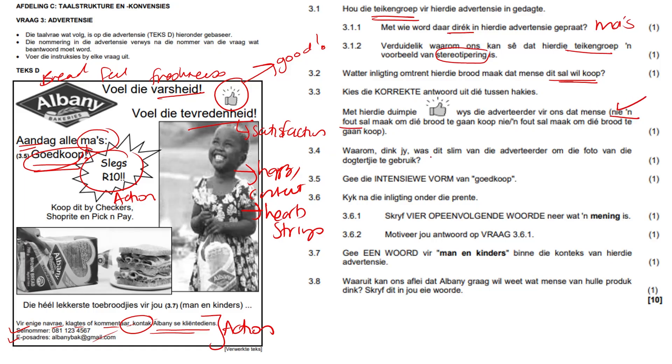Waarom dink jy was dit slim — clever — van die adverteerder om die foto van die dogtertjie te gebruik? Why was the advertiser smart to use the picture of the little girl on the advert? You can speak about how happy she is. You could say if she is happy, my children will probably be happy and I will be happy when I eat this bread.